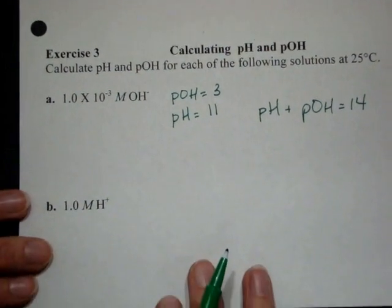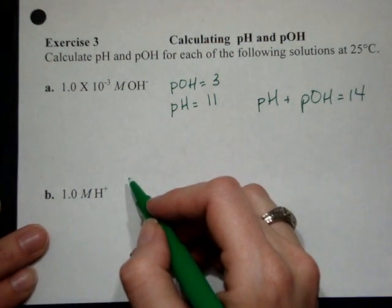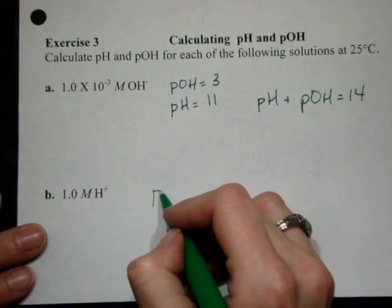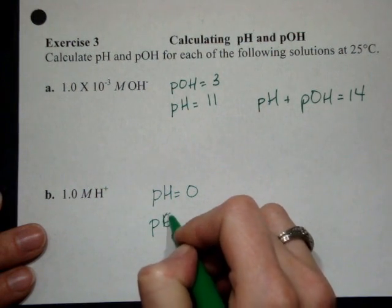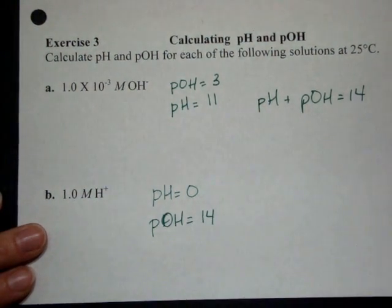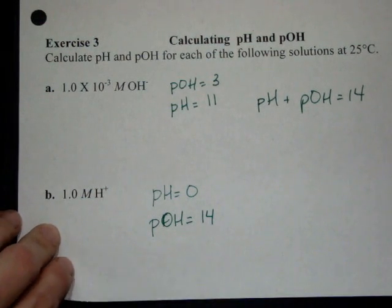Go ahead and at least put some work on there. And then the same thing for exercise 3. 1 molar here. pH, you get 0. So pOH, you get 14. Try them out and make sure you get them.